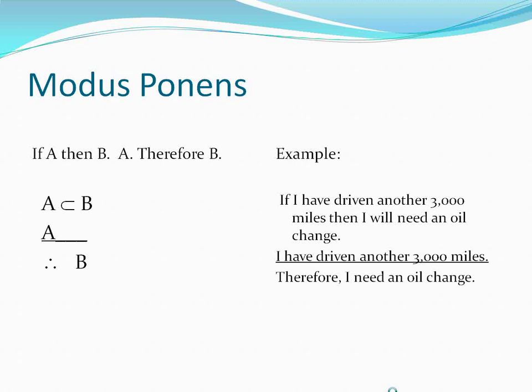Let's examine the various components of this argument. The 'if' and 'then' are highlighted in red, as is their symbolic form. Since we have an if-then, we know we need one of those sideways U symbols. The premise A — 'I have driven another 3,000 miles' — appears twice, as does B — 'I will need an oil change.'